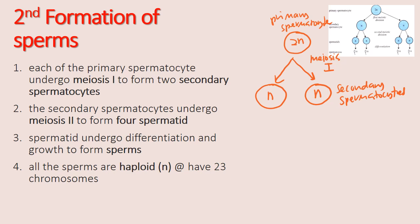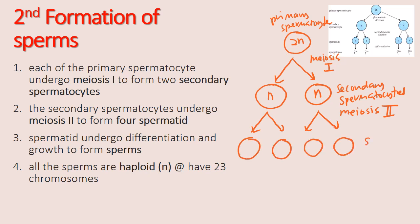What happens next is both of the secondary spermatocytes will undergo meiosis two, and this will form four spermatids. These four cells are known as spermatids, and all the spermatids are haploid cells. Please take note that the spermatid is not yet a sperm or spermatozoa.